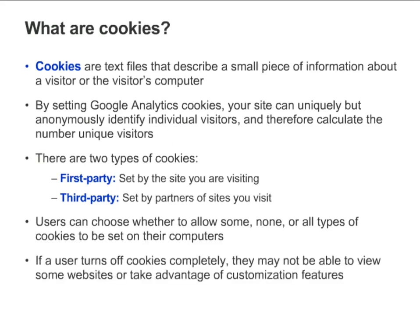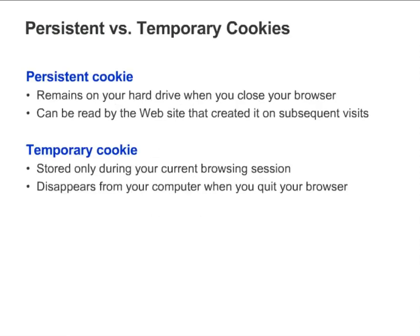However, if a user does not allow cookies at all, they may not be able to view some websites or take advantage of customization features. Cookies can be set with or without an expiration date. This detail is important in order to understand how Google Analytics tracks visits and unique visitors. Persistent cookies have an expiration date and remain on your computer even when you close your browser or shut down. On return visits, persistent cookies can be read by the website that created them.